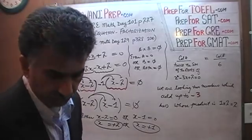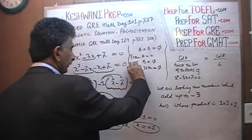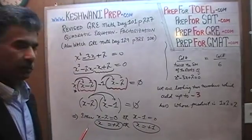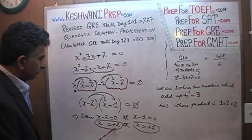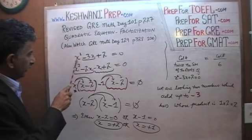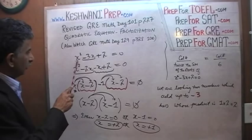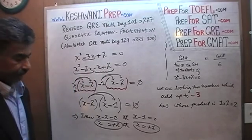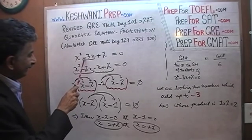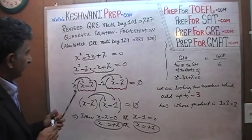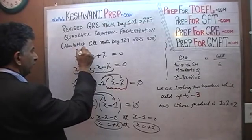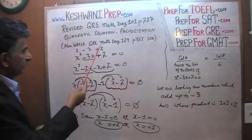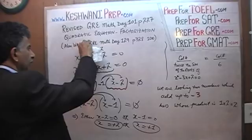Let's verify: substituting x = 2: 2² − 3(2) + 2 = 4 − 6 + 2 = 0. ✓ Substituting x = 1: 1² − 3(1) + 2 = 1 − 3 + 2 = 0. ✓ Both roots check out — we verified it and it works. Those are the correct roots.